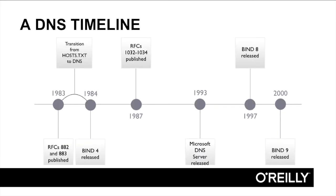Here's a look at a timeline of DNS history over the past 30-odd years. You can see that the scale along the horizontal axis is not particularly accurate. The first RFCs — Request for Comments documents — to describe DNS were published by Mockapetris back in 1983, and the ARPANET made the transition from the host table to DNS between their publication and 1984. In 1984, the first version of BIND — the preeminent open source implementation of the DNS specs — came out. It was BIND 4. Mockapetris updated the core DNS RFCs in 1987 to RFCs 1032 through 1034, upon which the current version of DNS is actually still based.